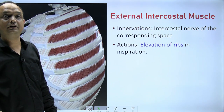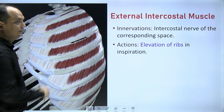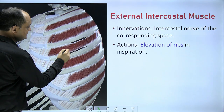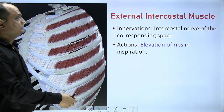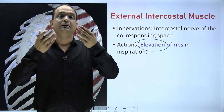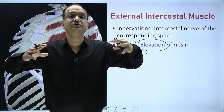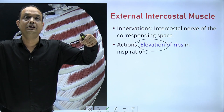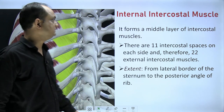The action of the external intercostal: the origin on the upper rib pulls the insertion on the lower rib, resulting in elevation of the ribs. This elevation causes chest expansion, which increases the volume of the cavity — facilitating inspiration. So the external intercostal is active during inspiration by elevating the ribs.